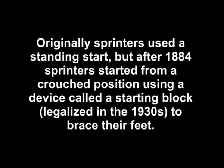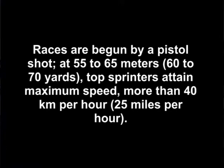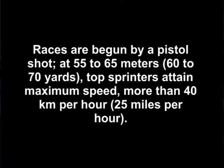Originally, sprinters used a standing start, but after 1884, sprinters started from a crouched position using a device called starting block. It was legalized in the 1930s to brace their feet. Races are begun by a pistol shot at 55 to 65 meters, i.e. 60 to 70 yards. Top sprinters attain maximum speed of more than 40 km per hour, i.e. 25 miles per hour. After the 65-meter mark, the runner begins to lose speed through fatigue.